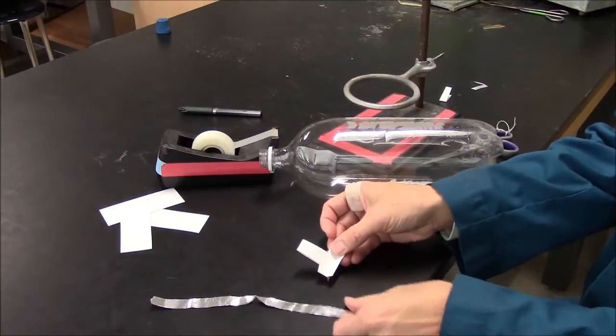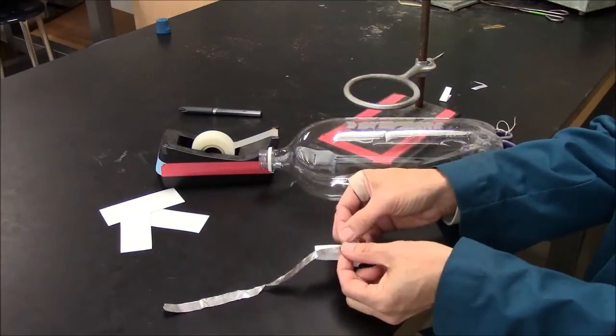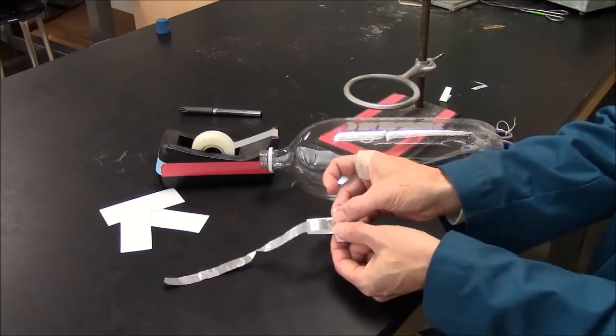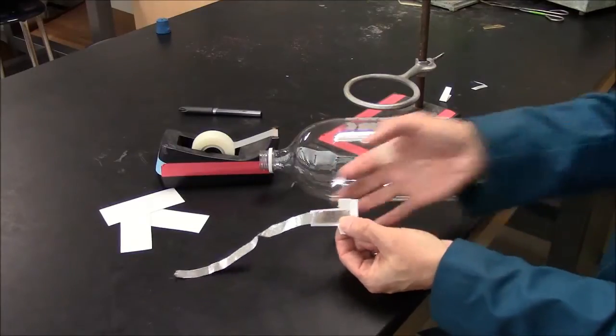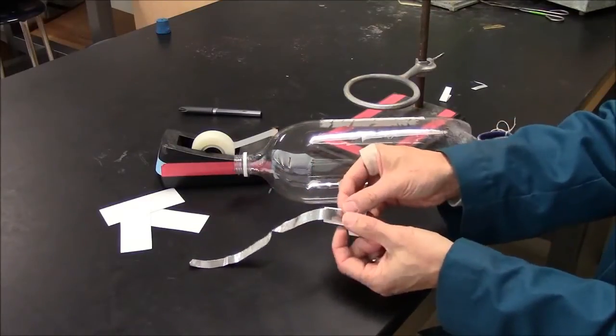I also want to check to see whether the paper is wider than the foil. So you can see paper is wider than the foil. That's desirable.